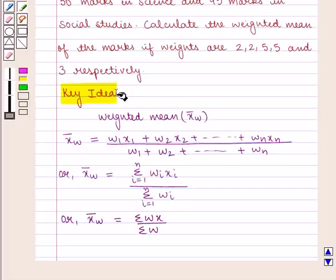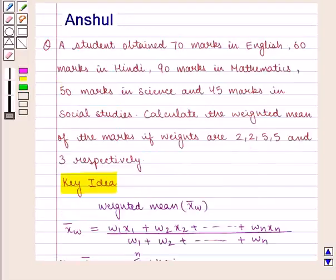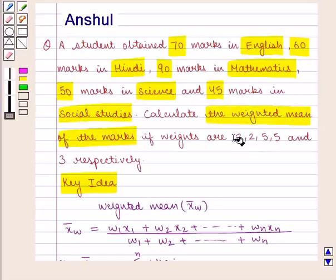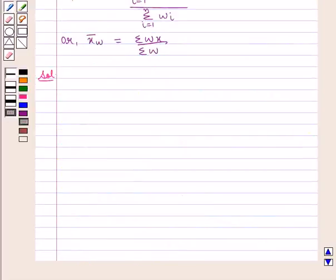With this key idea we shall proceed with the solution. Here the marks of a student in 5 subjects is given as 70 in English, 60 in Hindi, 90 in Mathematics, 50 in Science and 45 in Social Studies. We need to calculate the weighted mean of the marks if the weights are given by 2, 2, 5, 5 and 3 respectively. Let xi be the marks of the student and wi be the corresponding weight.